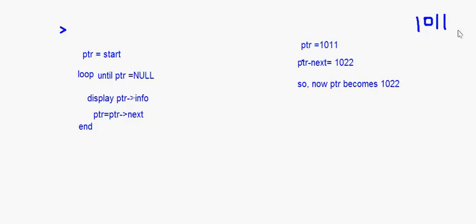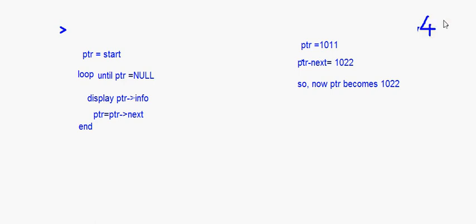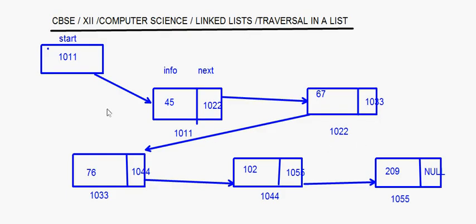Inside node one zero two two the value is sixty-seven. So first forty-five will be printed, then sixty-seven. Then ptr next of one zero two two is one zero three three, so it comes to that node and prints seventy-six. Then ptr next is one zero four four, and so ptr comes to that node and one zero two is printed. Then ptr is equal to ptr next, which is one zero five five.